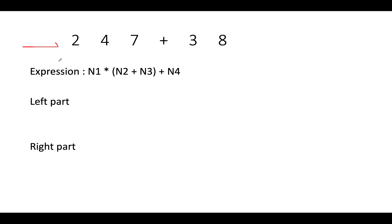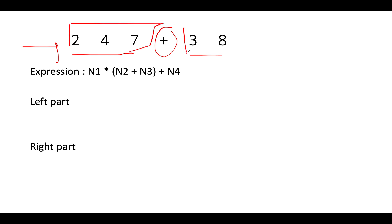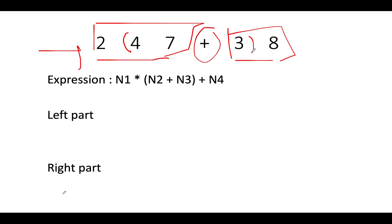Here we have the expression 247 plus 38. The left part has three digits: 2, 4, 7. The right part has two digits: 3 and 8, with the plus sign in the middle. We need to add a left parenthesis in the left part and a right parenthesis in the right part. After adding both parentheses, four variables are introduced. The first one is N1, which belongs to the number before the insertion of the left parenthesis — here it turns out to be 2.